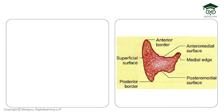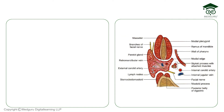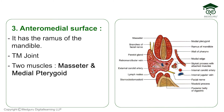The anteromedial surface faces the mandible and its related structures. It is related to the ramus of the mandible, the TM joint, and two muscles that can be remembered by the letter M: masseter and medial pterygoid.